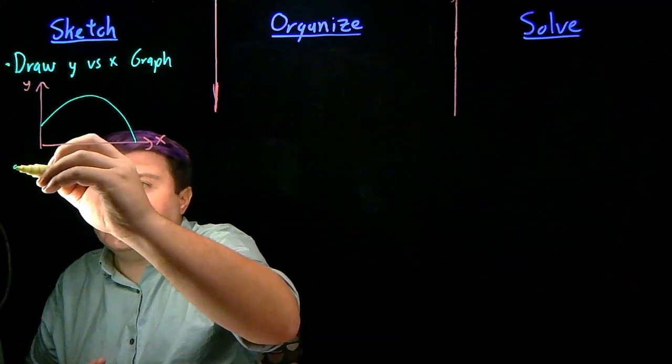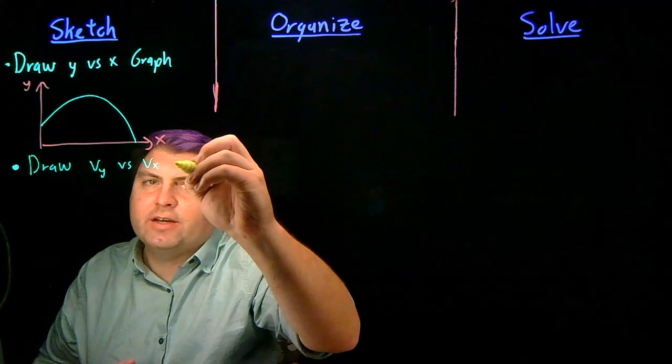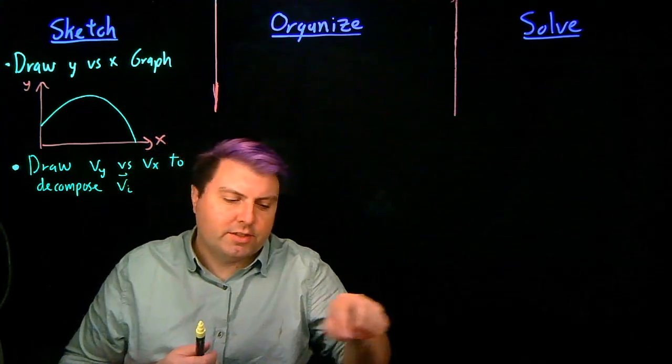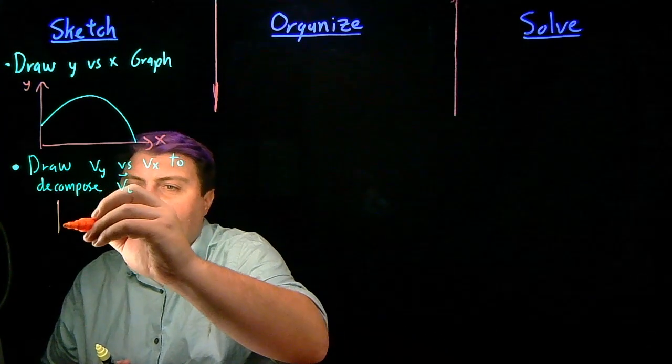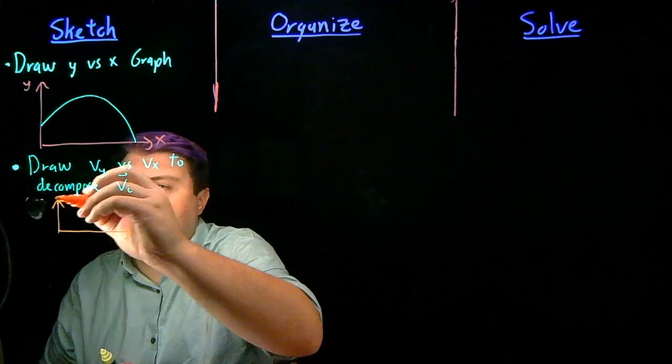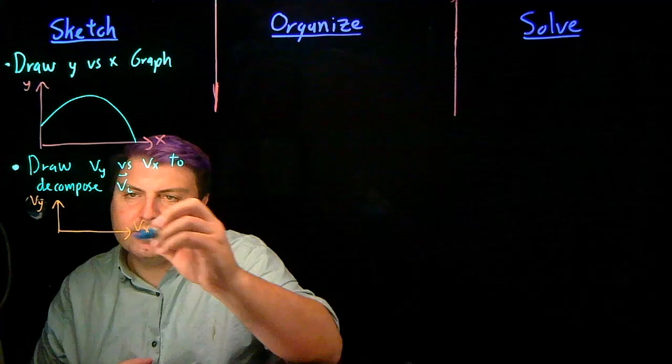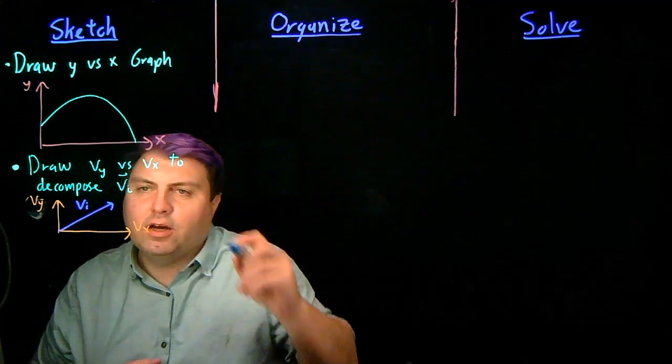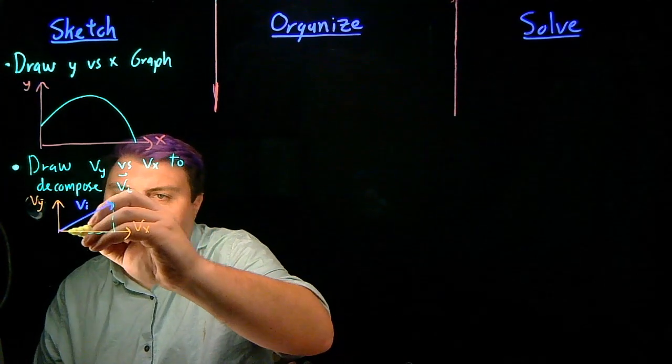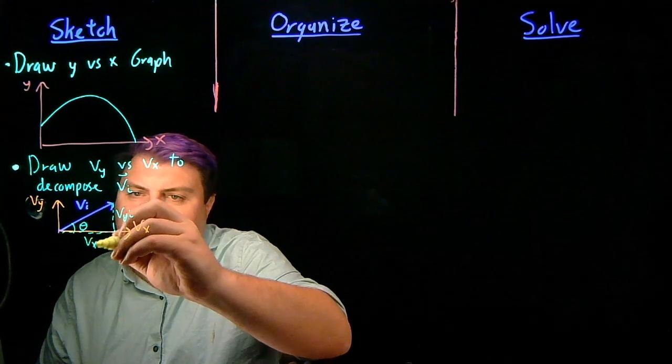After we've drawn the y-versus-x, we want to draw a separate graph of vy-versus-vx to decompose any initial velocities. So in this case, we are going to have the velocity in the y and the velocity in the x. This is going to be a single vector of our initial velocity. And then what we do with this single vector is decompose it into vy-i and vx-i.